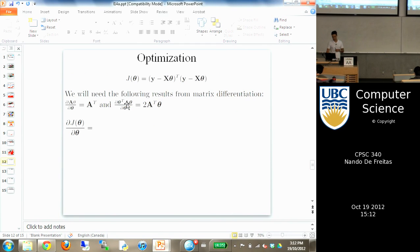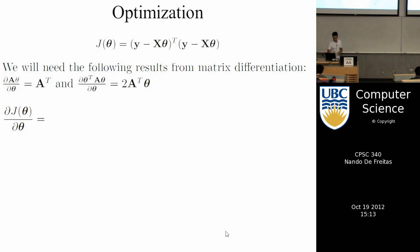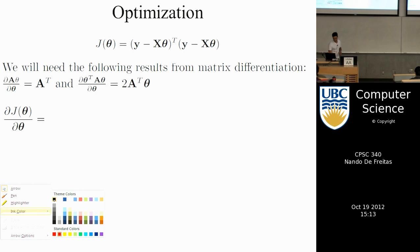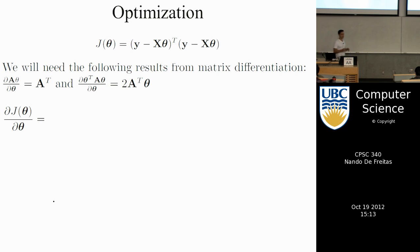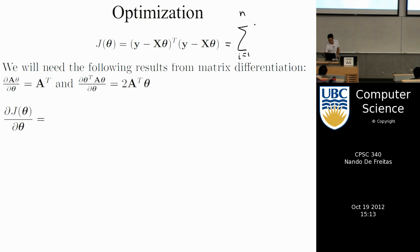How do we solve for theta? In order to solve for theta, we're going to differentiate the cost function and equate to zero, because where the derivative becomes flat, that's the location of the minimum. Now this cost function is written in matrix form.